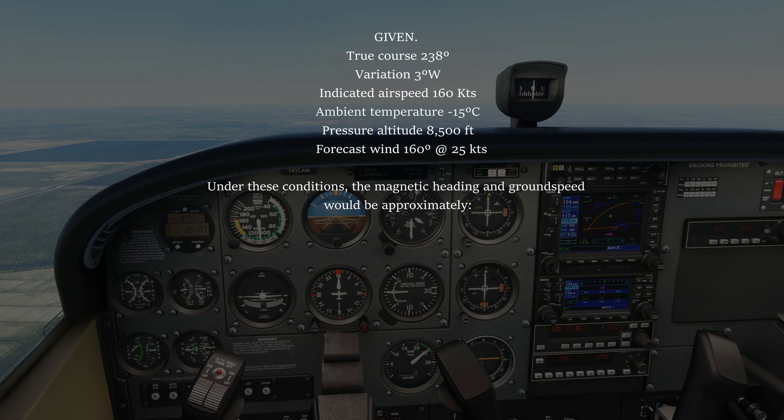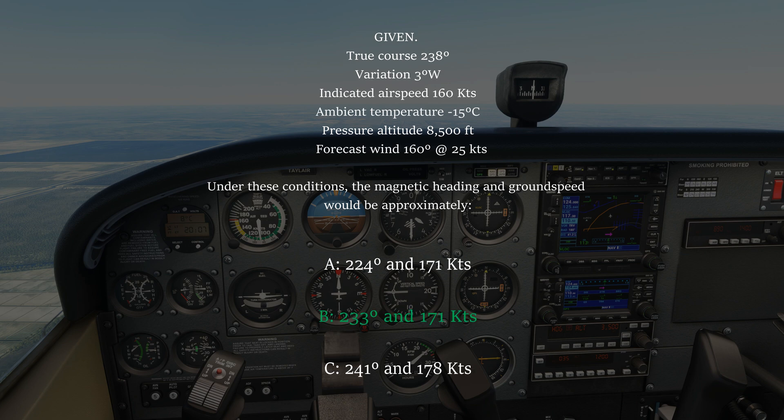So the answer to the question: given a true course of 238 degrees, a variation of 3 degrees west, indicated airspeed of 160 knots, ambient temperature of minus 15, pressure altitude of 8500 feet, and a forecast wind of 160 degrees at 25 knots — under these conditions the magnetic heading and ground speed would be approximately 233 degrees and 171 knots.